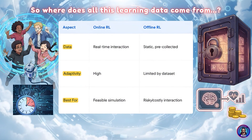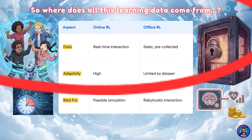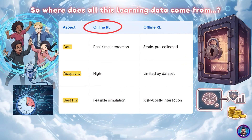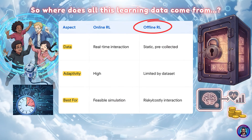Where does all this learning data come from? With online RL, the agent learns live, interacting in real time — think of a video game AI that's adapting to your every move. But with offline RL, it learns from a big static dataset that's already been collected. This is crucial for situations where mistakes are a big deal. You wouldn't want a medical AI learning by trial and error on real patients. Offline is way safer when the stakes are high.